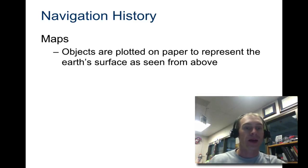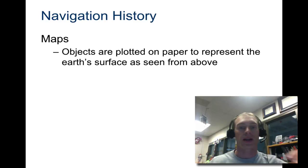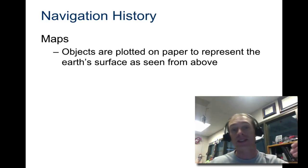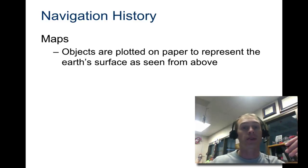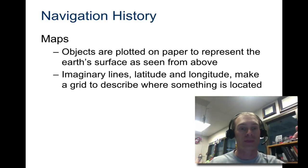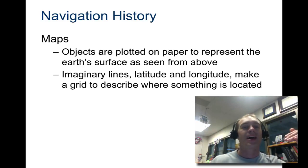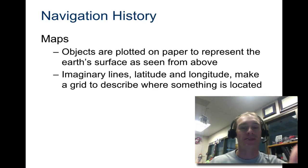Then we got into maps, where they plotted objects on paper to represent the surface as you might see it from above, although early on they weren't able to see things from above. And then some imaginary lines were added to these maps — latitude and longitude.